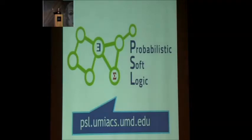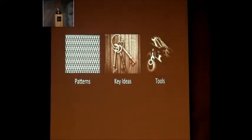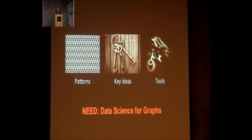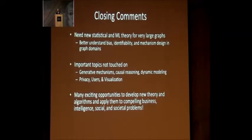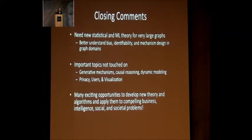For more information, there are videos available and it's open source so you can download it — normally I give an hour-long talk on this. To conclude: I really think we need data science for graphs. What I've covered are just little hints at the pieces of it, but there's a fundamental opportunity to develop new theory. There's so much classic statistics based on IID samples — how do we deal with this heterogeneous case with all kinds of different biases? Important things I didn't cover but are in the program: generative models, causal models, privacy, and users. There's a lot of exciting work to be done across many domains.